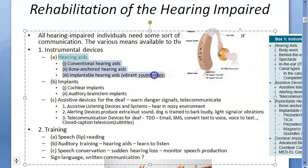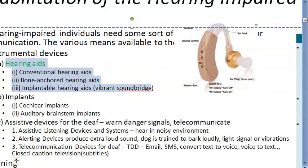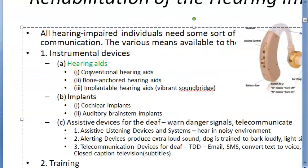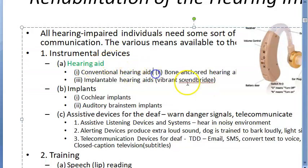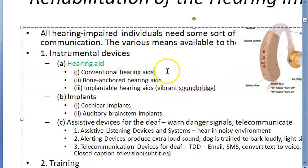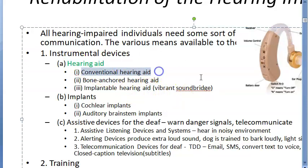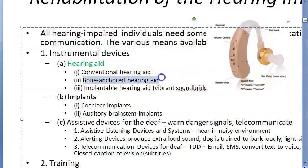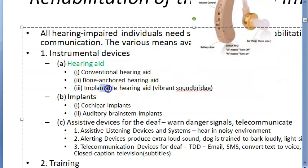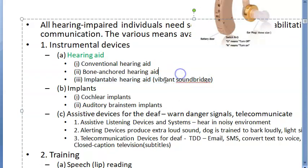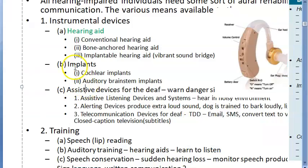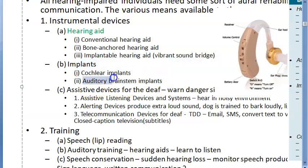A hearing aid is something you know from long. Basically, under hearing aids you have a conventional hearing aid, a bone-anchored hearing aid, and an implantable hearing aid. Under implantable hearing aids there is what is called the Vibrant Sound Bridge. Under implants there are two things: cochlear implants and auditory brainstem implants.